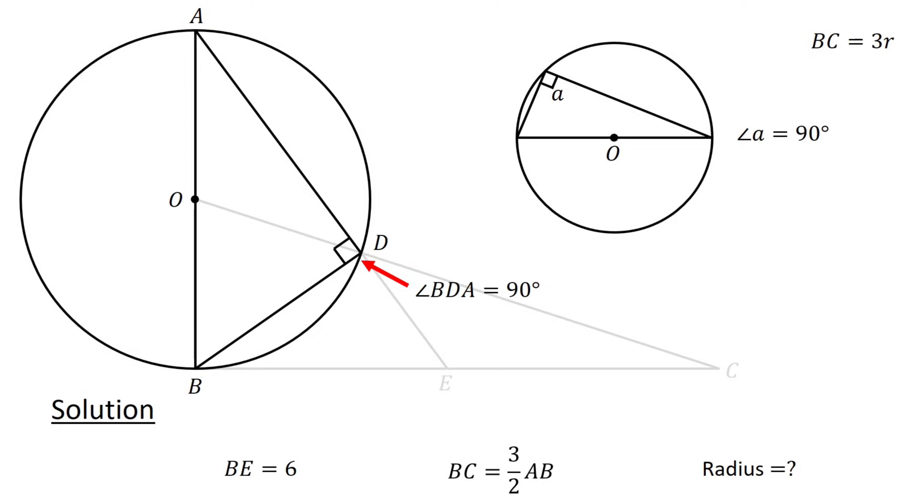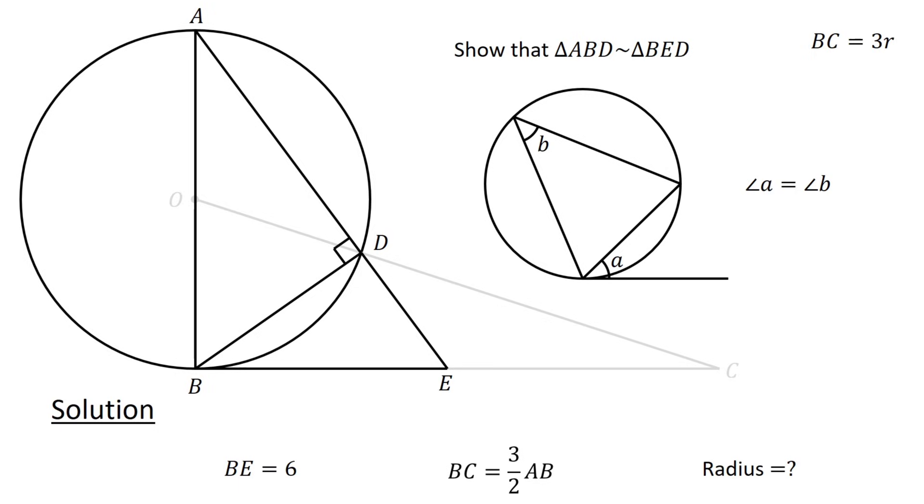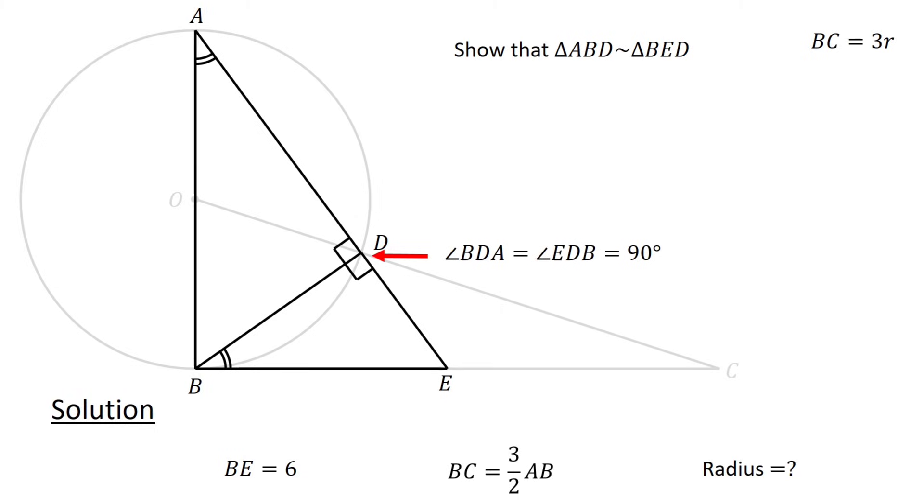Following this, consider triangle ABD and triangle BED. Let us show that these triangles are similar. By the alternate segment theorem, we have angle DAB equals angle DBE. Furthermore, angle BDA equals angle EDB equals 90 degrees. Therefore, by the AAA similarity theorem, triangle ABD is similar to triangle BED. Since corresponding sides in similar triangles are proportional, we have AB over BE equals BD over DE.